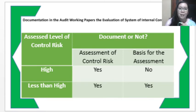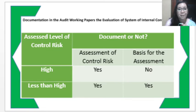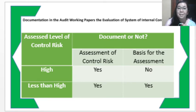We have here a table for the assessed level of control risk and whether the auditor will document the evidence or not. If the control risk is assessed at a high level, the assessment of control risk should be documented, but there is no need to document the basis, because the auditor will not rely on the internal controls and is not responsible to substantiate that assessment. If the control risk is less than high or low, the auditor will document both the assessment and his basis, in order to substantiate his reliance on the internal control.